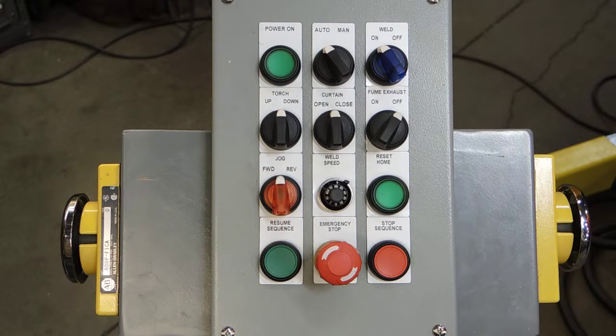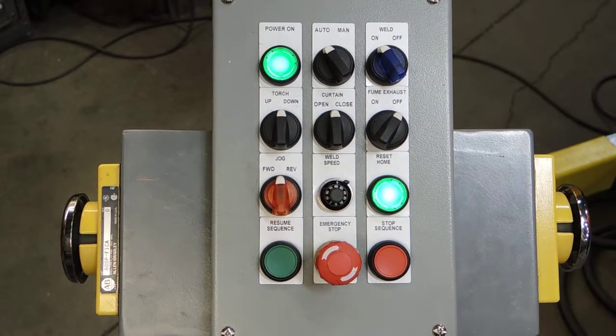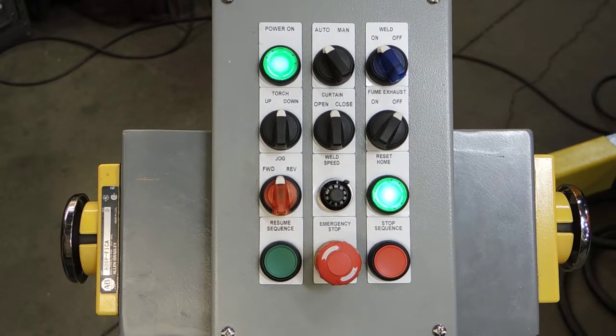Starting from the top left, we have our power on button. Once we push that in, it latches a coil in the cabinet and allows the rest of the functions to energize and we can continue operating the machine.